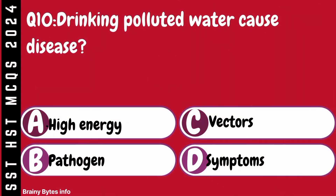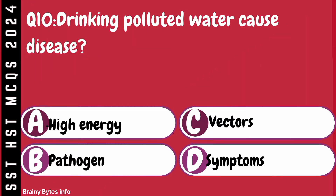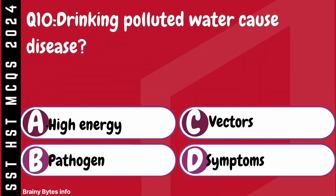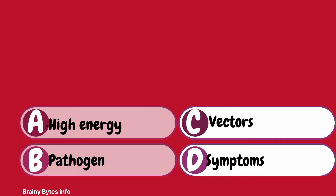Question 10. Drinking polluted water causes disease because it contains. A. High energy. B. Pathogens. C. Vectors. D. Symptoms.